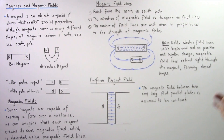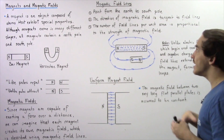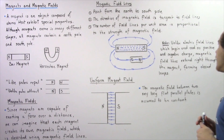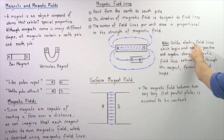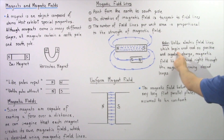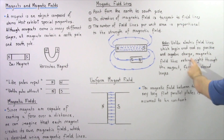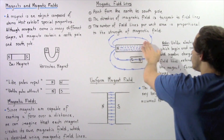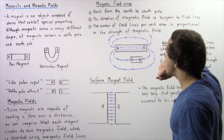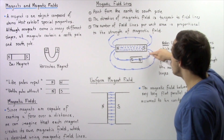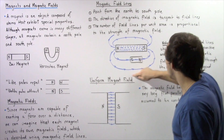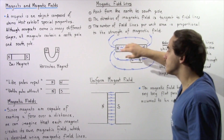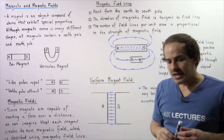Notice one important difference between electric field lines and magnetic field lines. Unlike electric field lines, which begin and end on positive and negative electric charges, magnetic field lines extend right through the magnet forming a closed loop, as shown in the diagram.